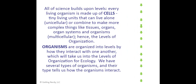All of science builds upon levels. Every living organism is made up of cells — tiny living units that can live alone, called unicellular, or combined to make more complex things like tissues, organs, and organ systems. The levels of organization start with atoms, which are not living, then molecules, which are also not living, but they start everything since all matter is made up of atoms and molecules.